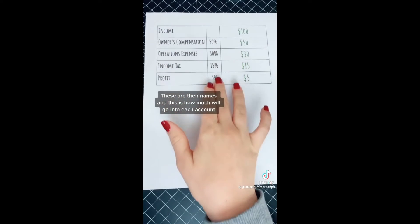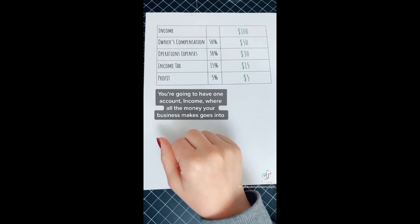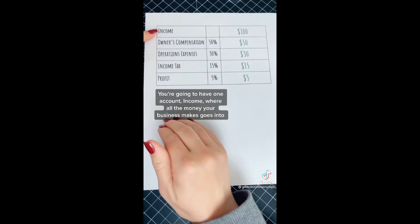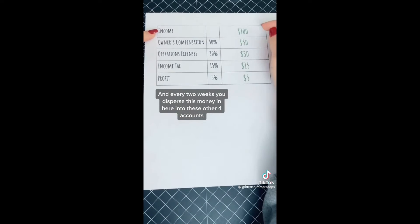These are their names and this is how much goes into each account. You're going to have one income account where all the money your business makes goes into, and every two weeks you disperse this money into these other four accounts.